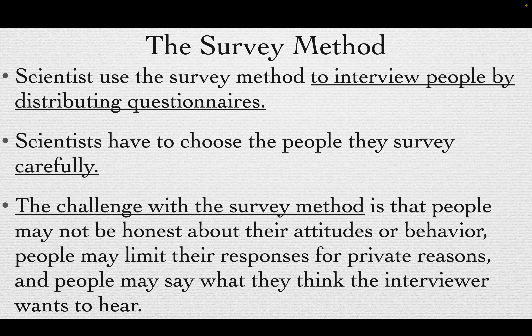The challenge with the survey method is that people may not be honest about their attitudes or behavior. People may limit their responses for private reasons, or say what they think the interviewer wants to hear. However, if you conduct a valid psychological survey, you can limit error to maybe 1% or 2%. Demographics — including male, female, age groups, geography, ancestry, and racial self-identification — all matter in understanding how people perceive things.